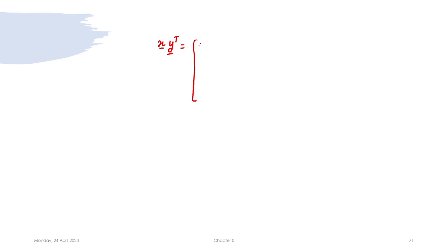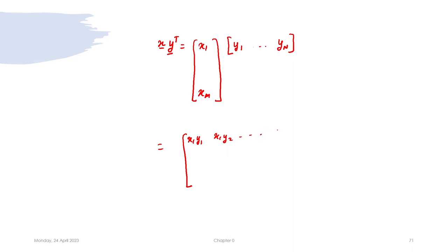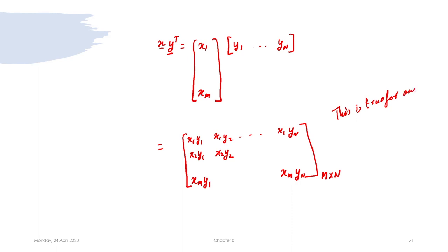So x times y transpose gives us: the first row and first column is x1*y1, first row and second column is x1*y2, up to x1*yn; similarly the last row goes from xm*y1 to xm*yn. This is an M times N matrix, and multiplying x with y transpose like this is called the outer product.